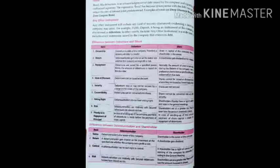Any other instrument includes any kind of security document evidencing a debt that a company may issue — for example, a public deposit, being an instrument of the company, is also termed a debenture. In other words, 'any other instrument' is a wider term that includes every instrument issued by the company that evidences the debt.